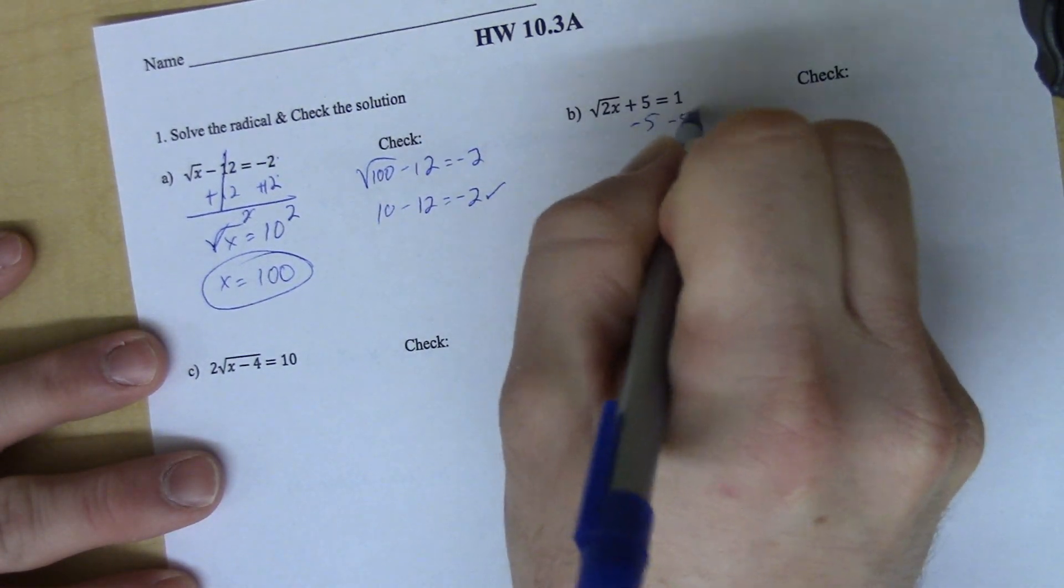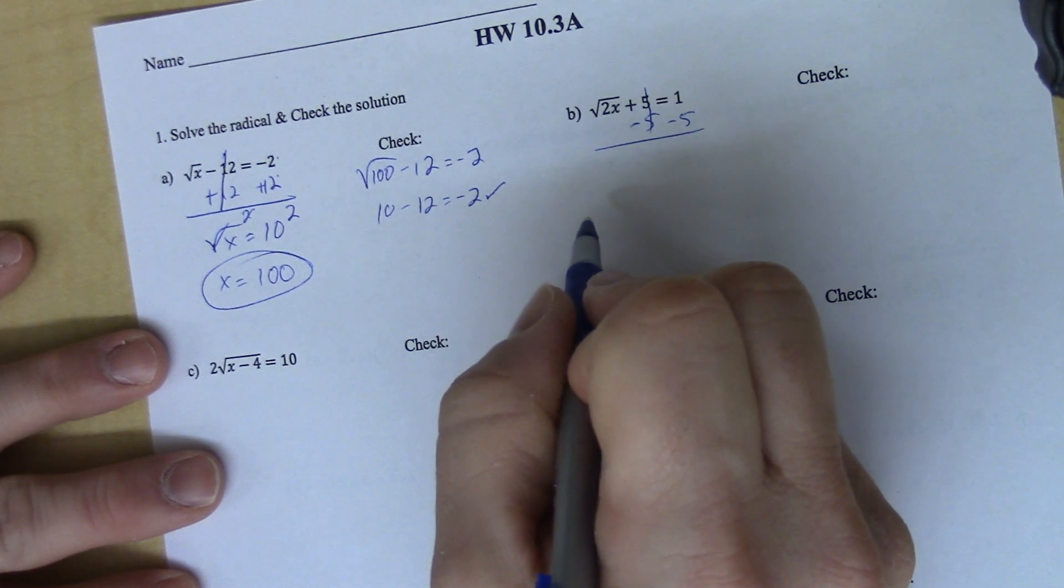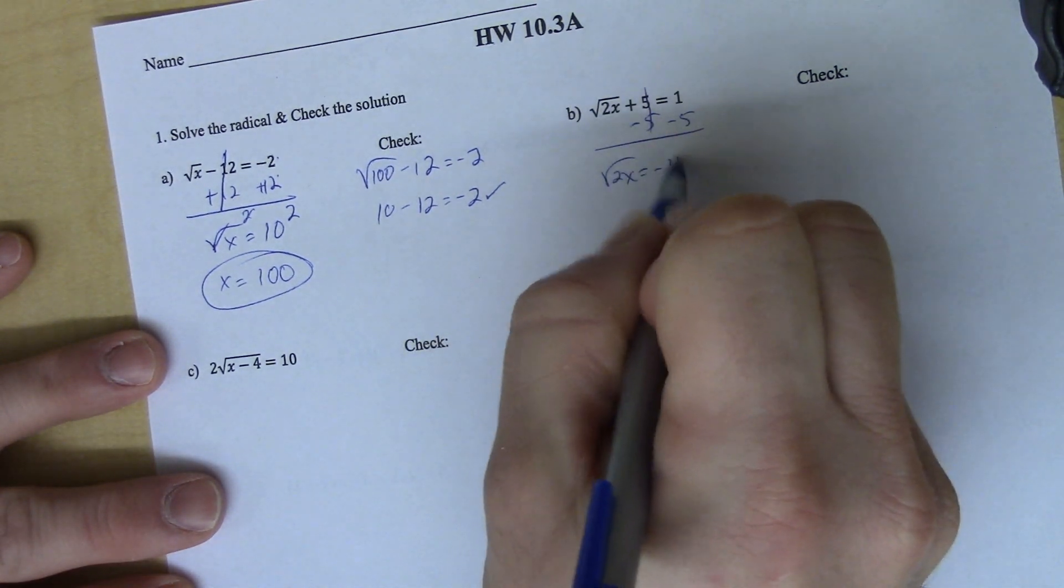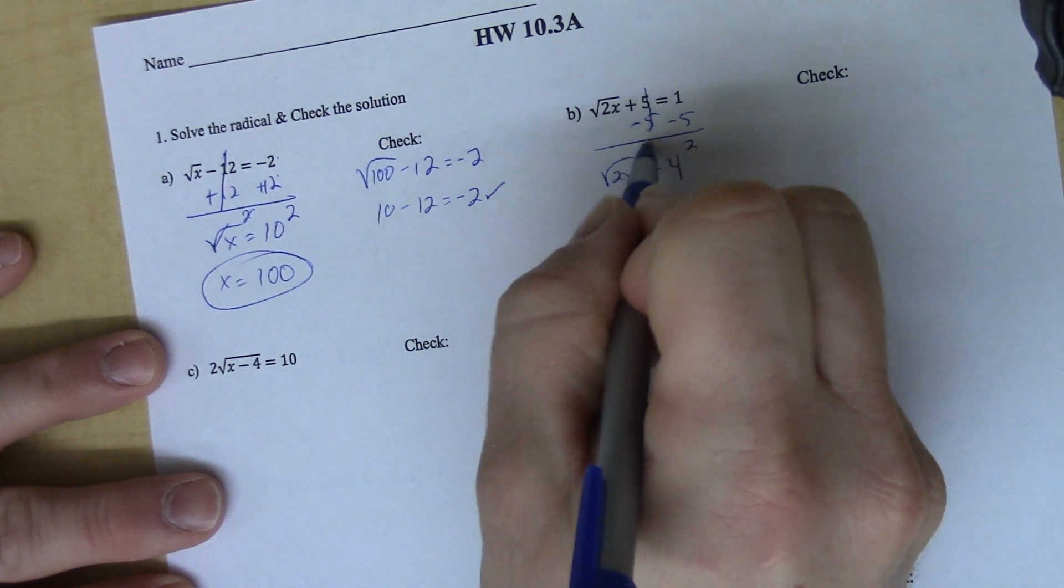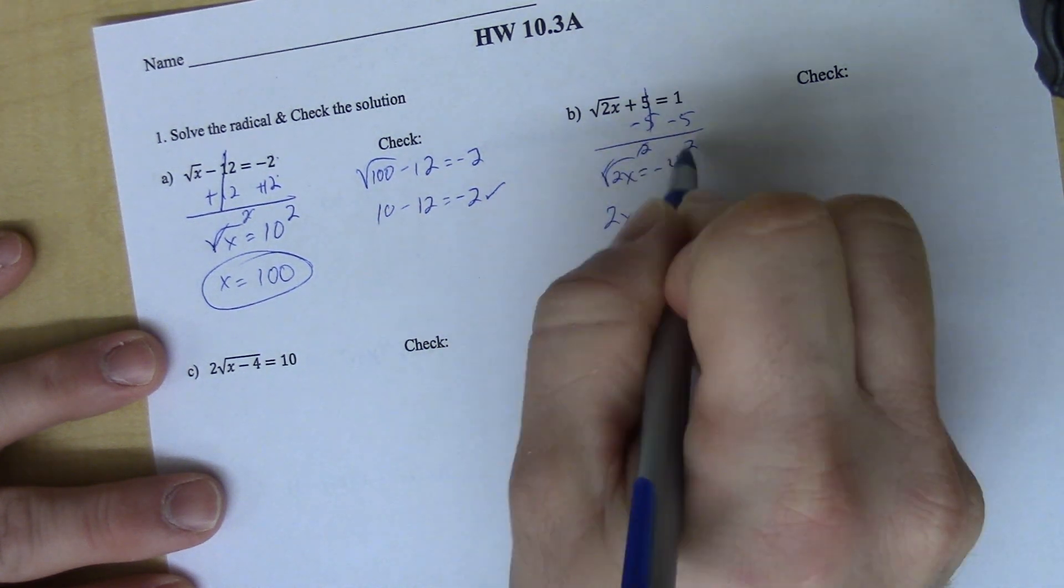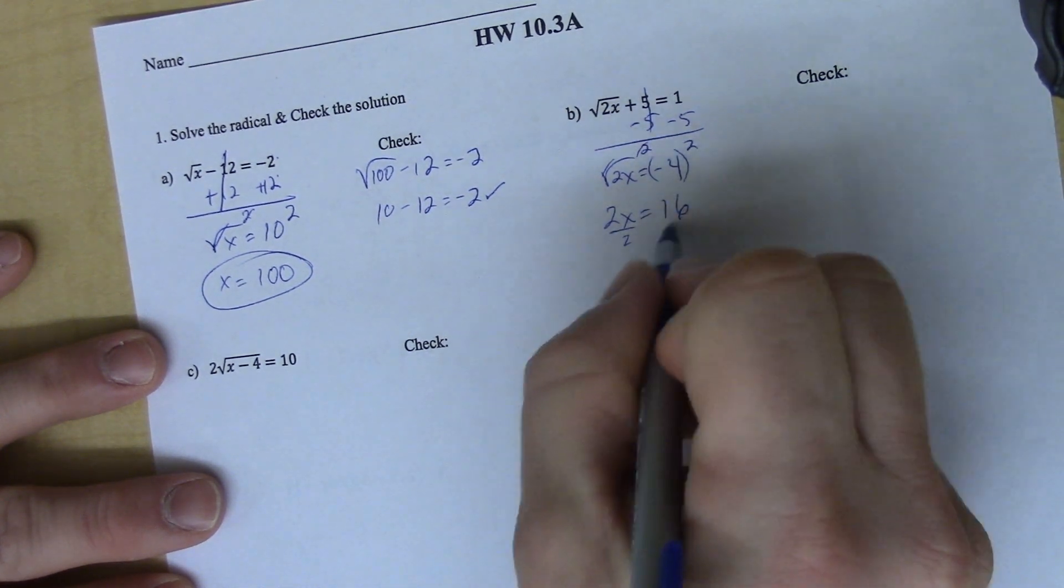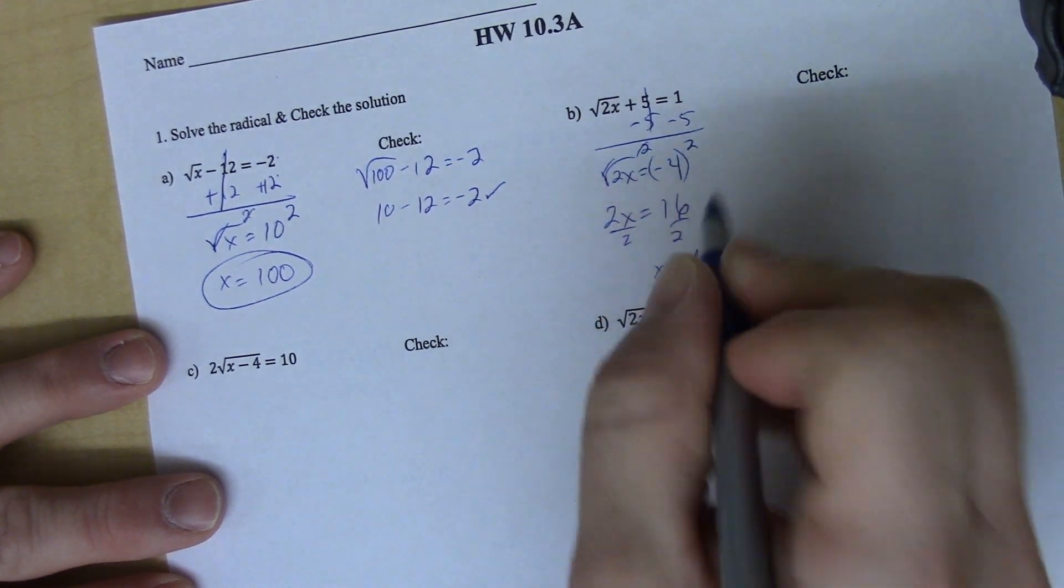Right here, again, minus 5 to both sides because I've got to get rid of what's being added or subtracted first. This becomes square root of 2x equals negative 4. I square both sides. Those will cancel. I get 2x. Negative 4 squared is negative 4 times negative 4, which is 16. And divide by 2 to get x equals 8.